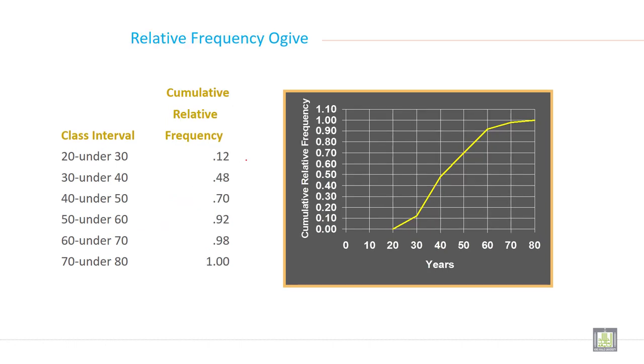Relative frequency ogive. When you draw relative frequency on a graph, it is called relative frequency ogive. Here is the cumulative relative frequency. This one, and here is the class, when you draw cumulative relative frequency with class, it is called relative frequency ogive.